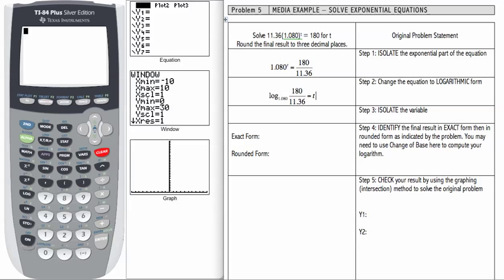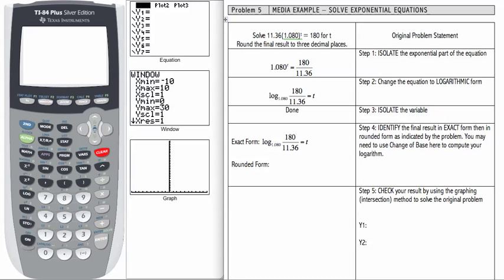Step three is to isolate the variable. In this case, t is by itself, so we are done. We next need to identify the final result in exact form, then in rounded form as indicated by the problem, so we are going to want a three decimal rounded form. Exact form is the same as my final part of step two, so I am just going to rewrite that here.